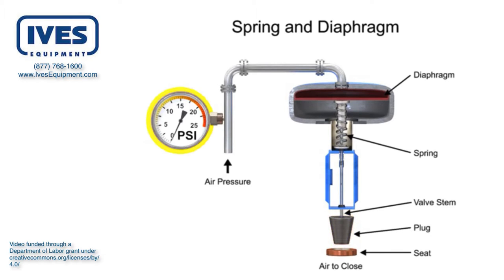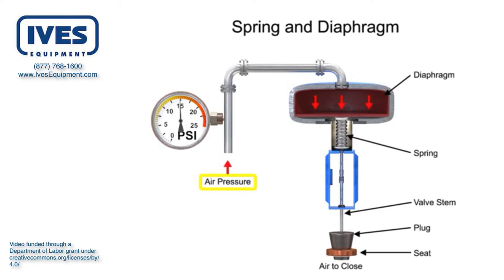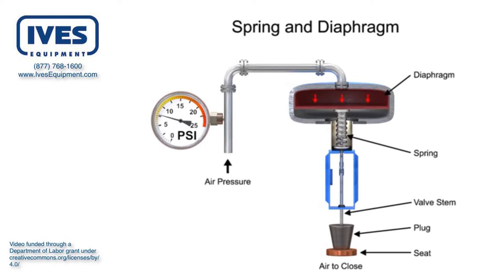A 15 psi pneumatic signal enters the housing at the top of the actuator. As pressure is exerted on the diaphragm, a downward force is applied against the spring which moves the restrictor. The diaphragm moves until it creates an equal but opposing force against the spring, at which time the motion stops as the plug meets the valve seat. With no air pressure, the restrictor is pushed upward by the spring to act as a normally open control valve.